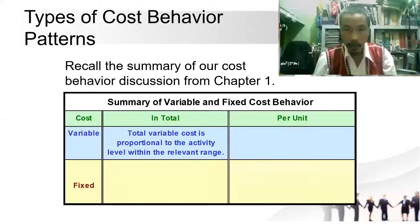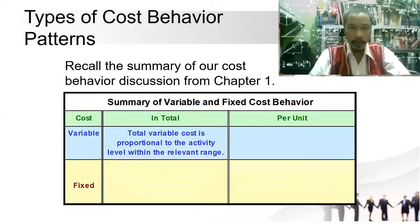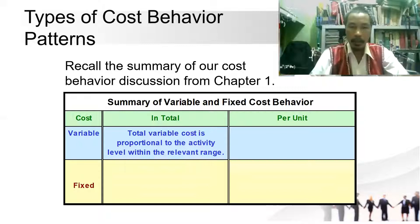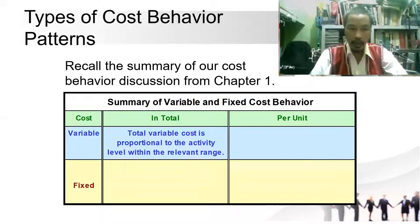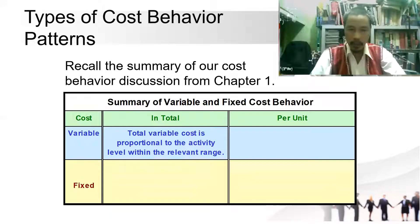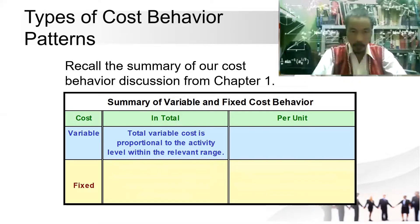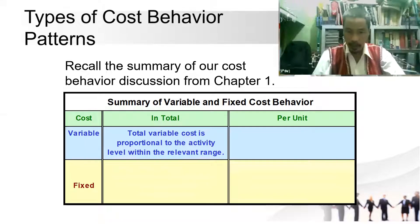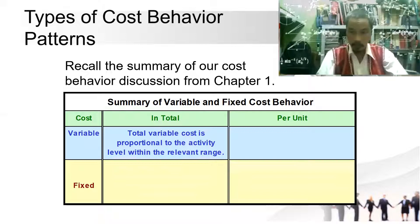There are types of cost behavior patterns. Recall the summary of our cost behavior discussion from Chapter 1. We have two types of cost: variable and fixed. For variable cost, in total, total variable cost is proportional to the activity level within the relevant range.